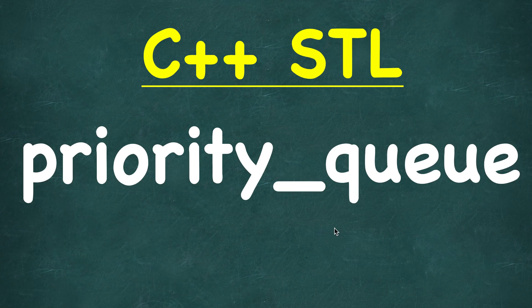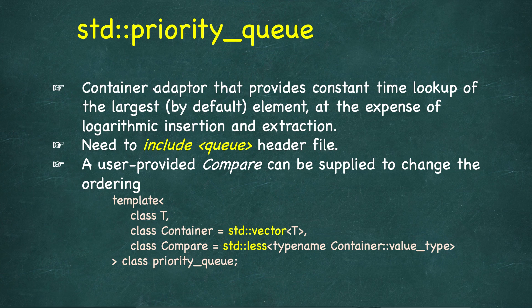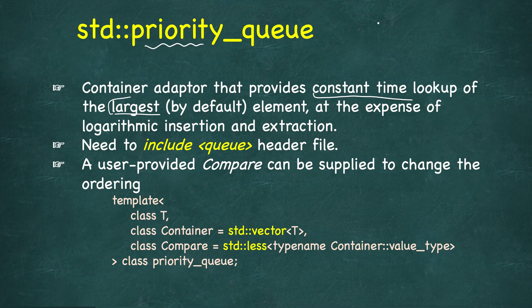In this lesson we will study another important container adapter called priority queue. It's a container adapter that provides constant time lookup of the largest element by default. It's a queue where elements have different priorities.